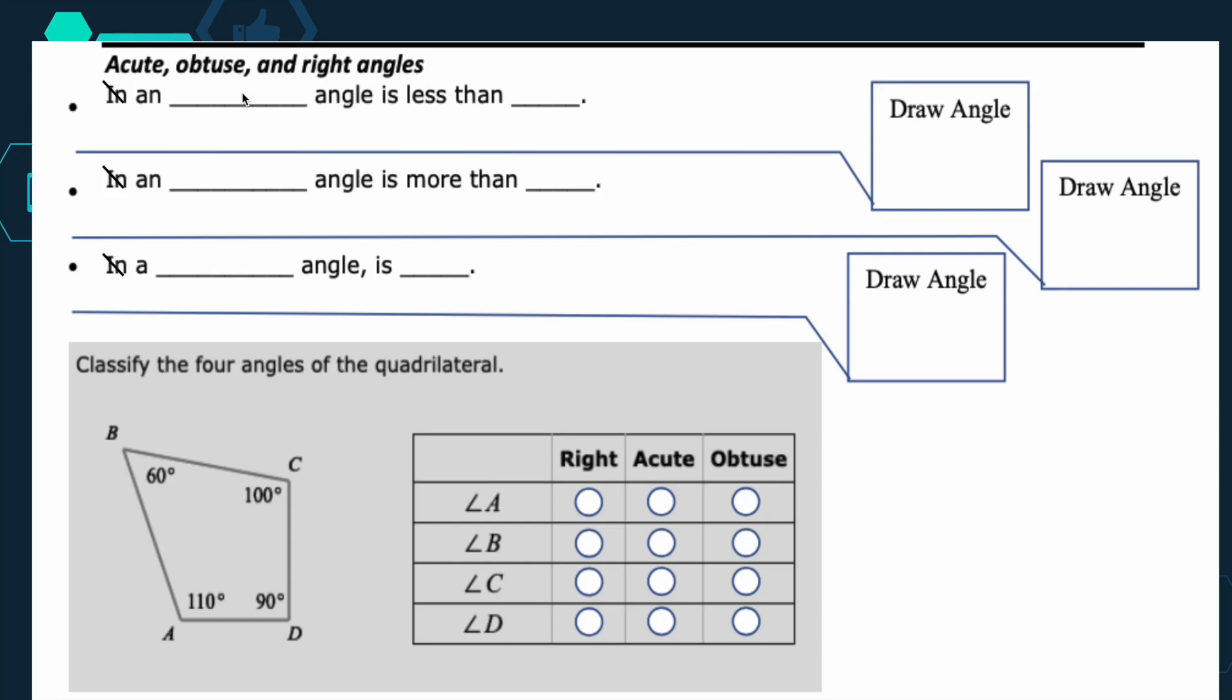In this video, we're going to talk about types of angles, so how to identify them based on their measurement. So we have acute, obtuse, and right angles. I apologize for a little typo here. I crossed them off, but it should be correct on your page.